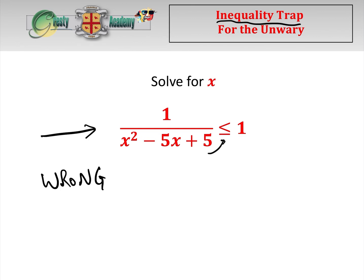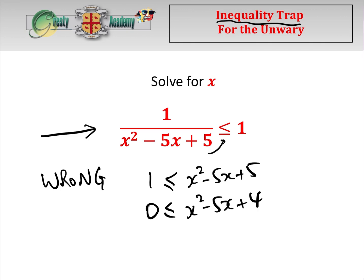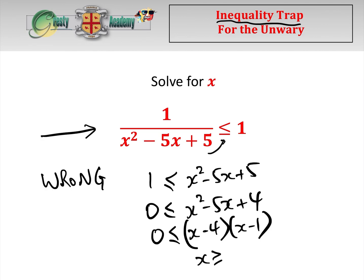What we do is multiply across, so we get: 1 ≤ x² − 5x + 5. Then we move that over to the other side: 0 ≤ x² − 5x + 4. Then we factorize — and remember, this is the wrong way of doing it, but it is a very common approach.